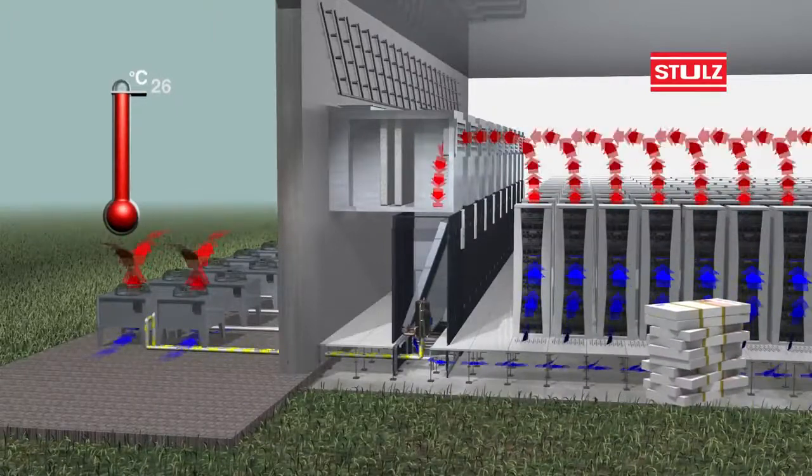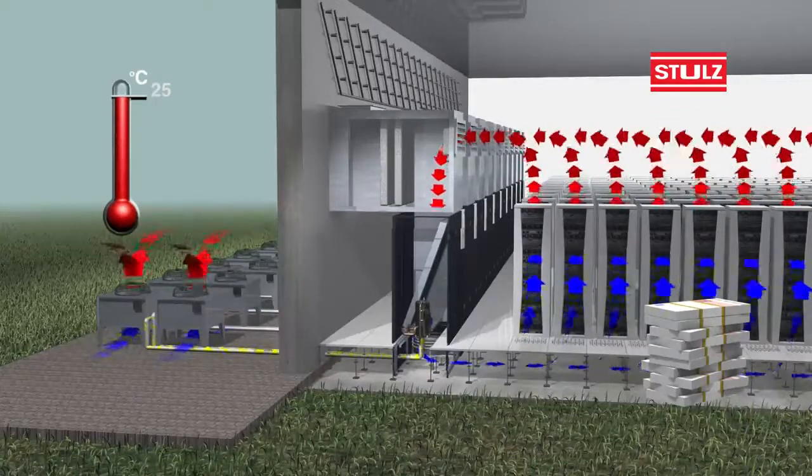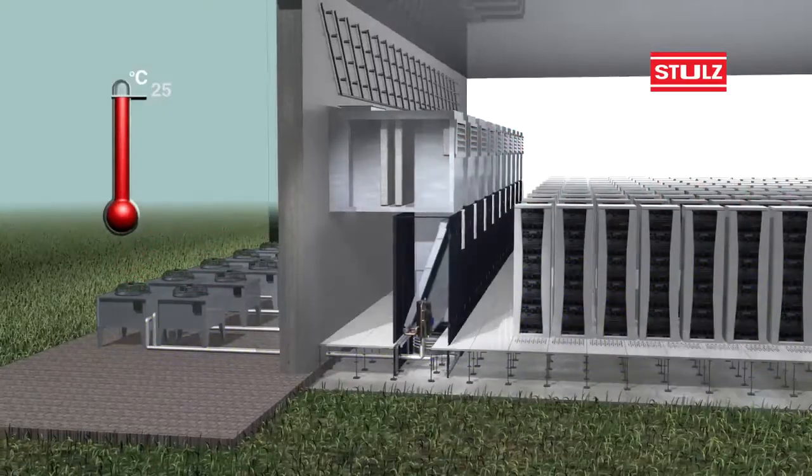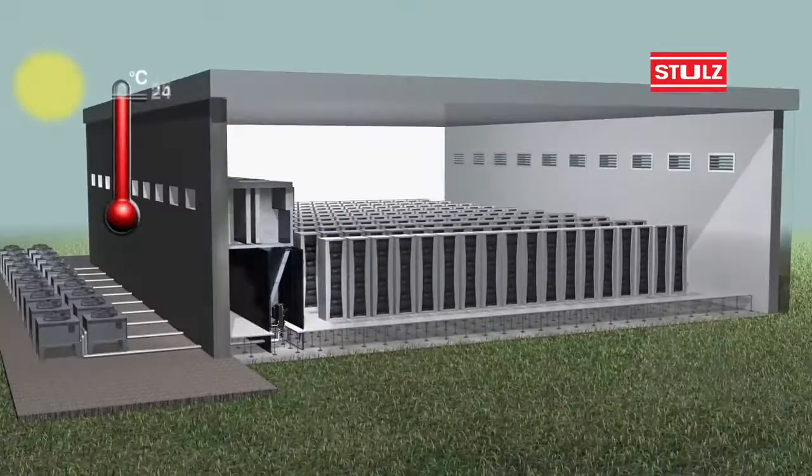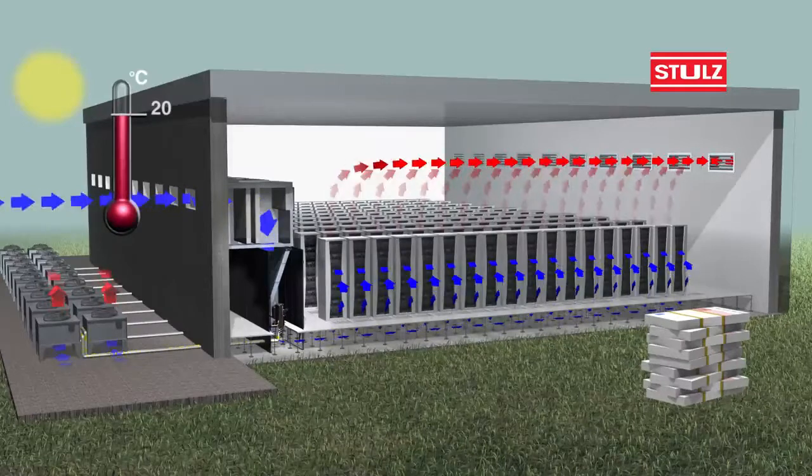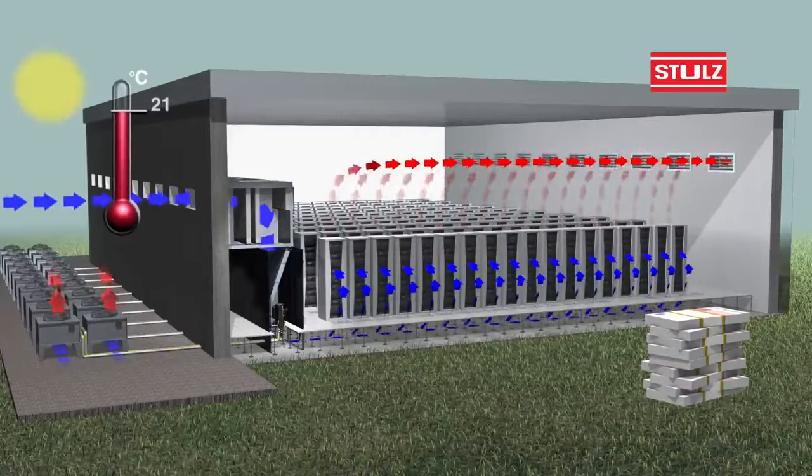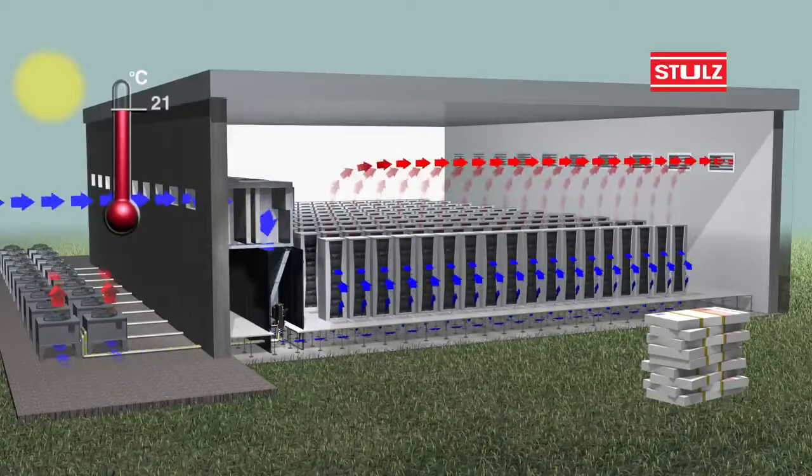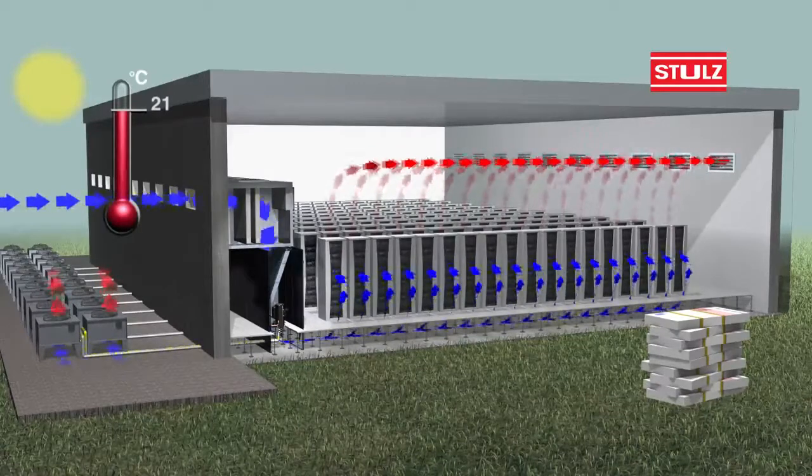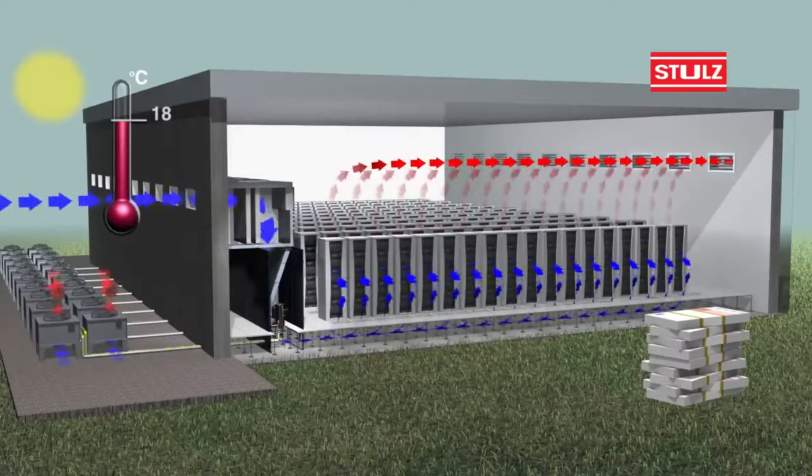However, with direct free cooling we can reduce compressor operations down to zero. When outside temperatures are between 18 to 24 degrees Celsius, our direct free cooling works by introducing outside air combined with compressor operation. In this mode we maximize use of outside air for cooling and consequently reduce compressor running time. Special filters placed in the outside air path remove unwanted particles from the incoming air, ensuring that clean filtered air flows into the data center and through the sensitive servers.